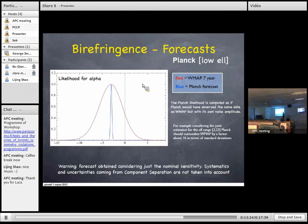So this is the forecast for Planck data at low L. So this is the likelihood for alpha. So the red curve is the likelihood obtained with the WMAP 7-year data, considering still the aforementioned estimators. And this is the likelihood that is expected for Planck. This likelihood is computed as if Planck would have observed the same data set as WMAP, but with its own noise amplitude. Again, as before, the warning is that this kind of forecasts have been obtained considering just the nominal sensitivity. So systematics are neglected here and of course they may impact.